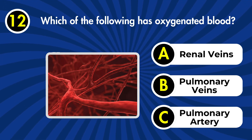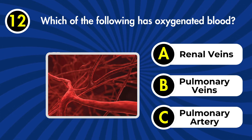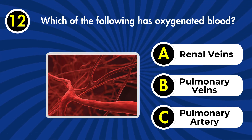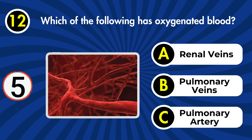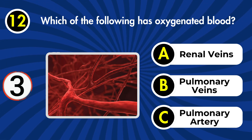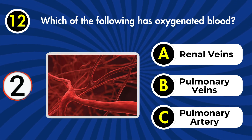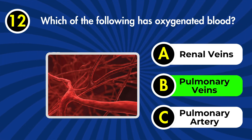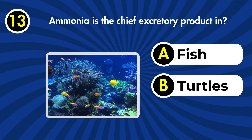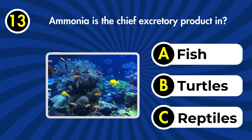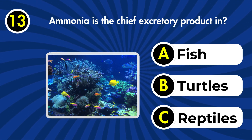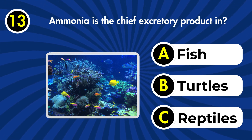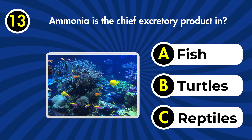Next question: which of the following carries oxygenated blood? a) Renal veins, b) pulmonary veins, c) pulmonary artery. Correct answer: b) pulmonary veins.